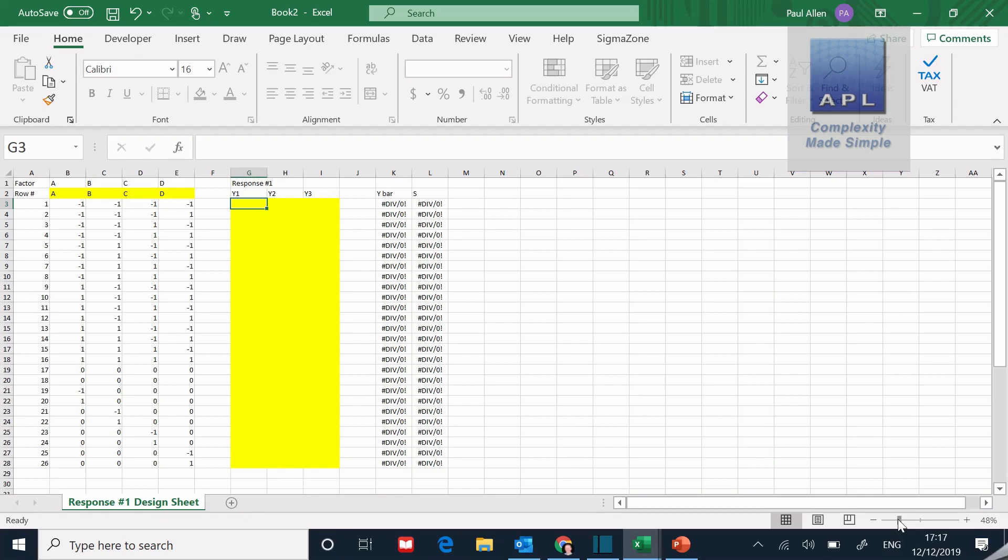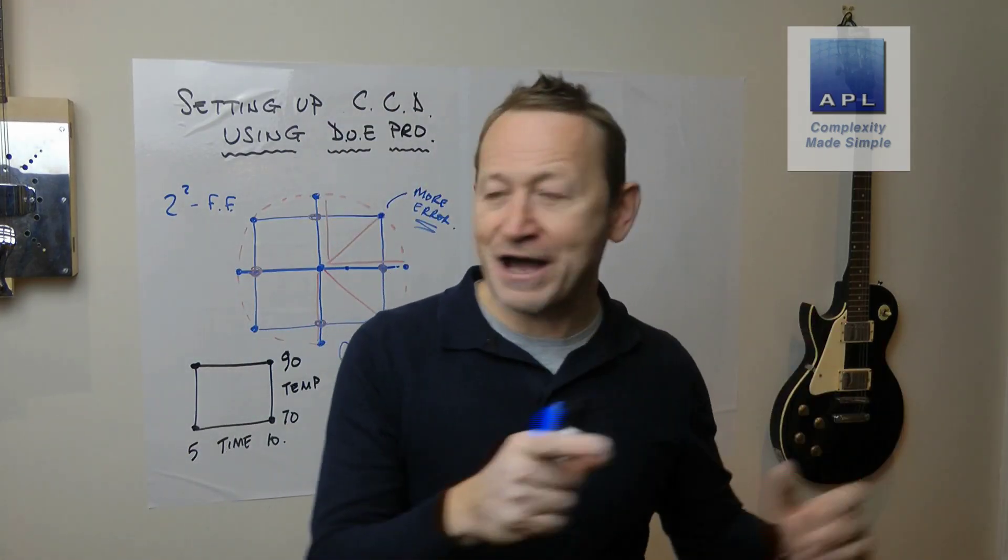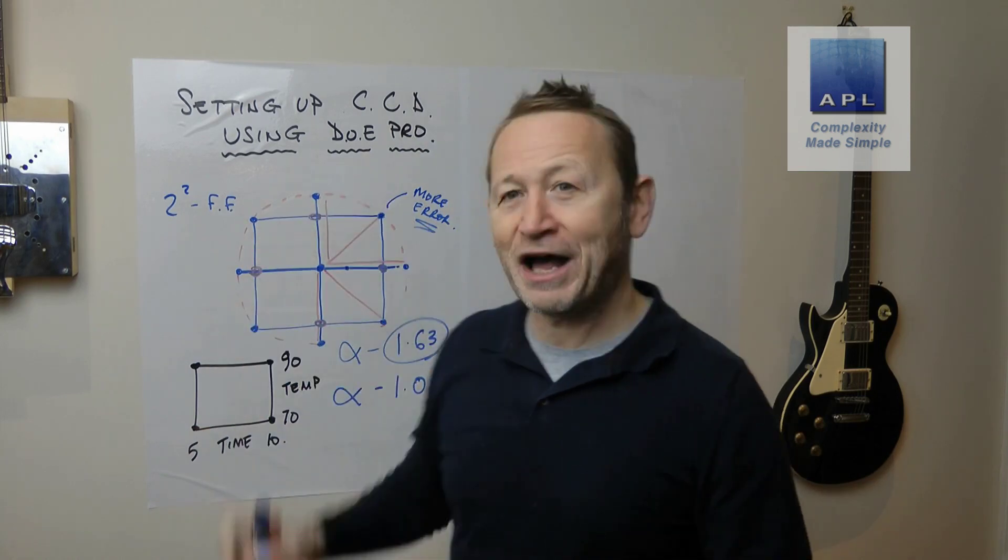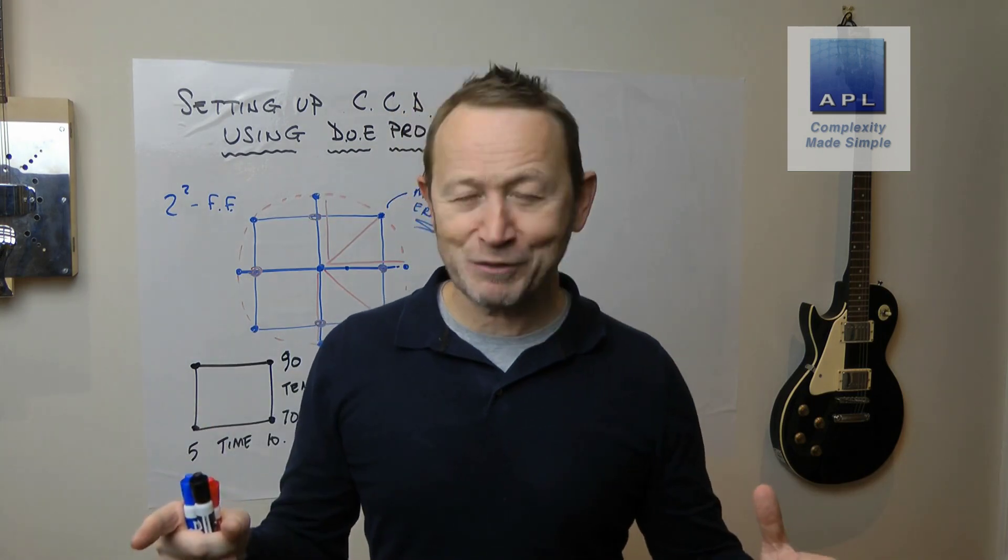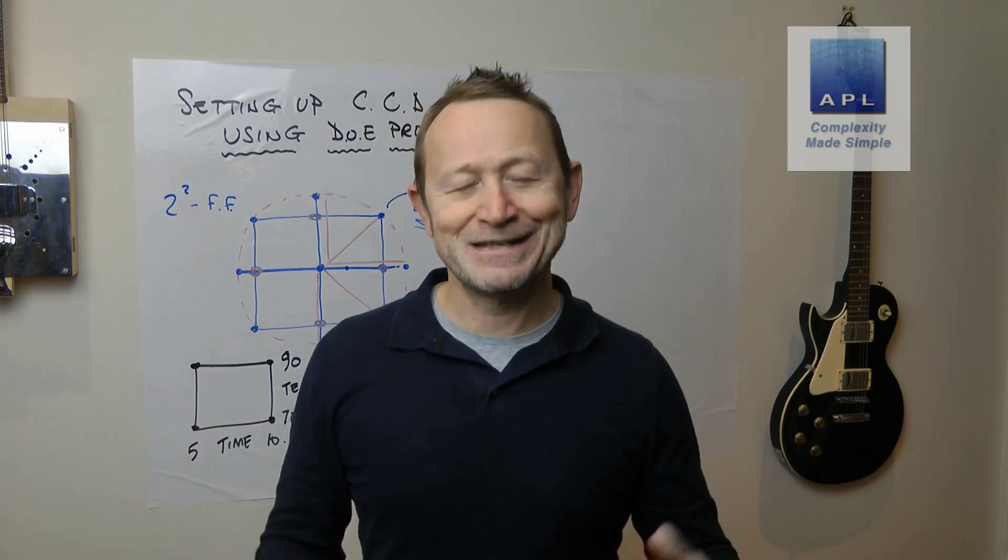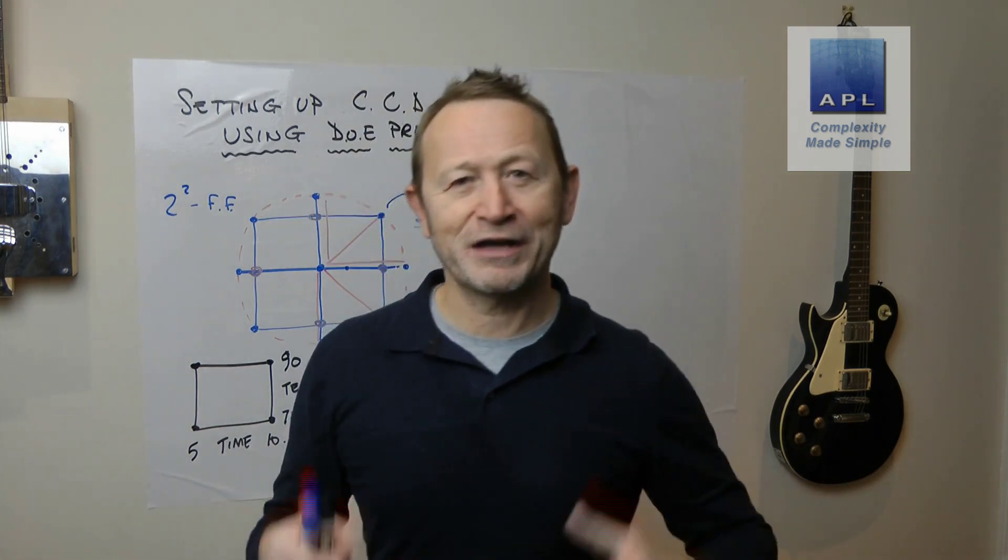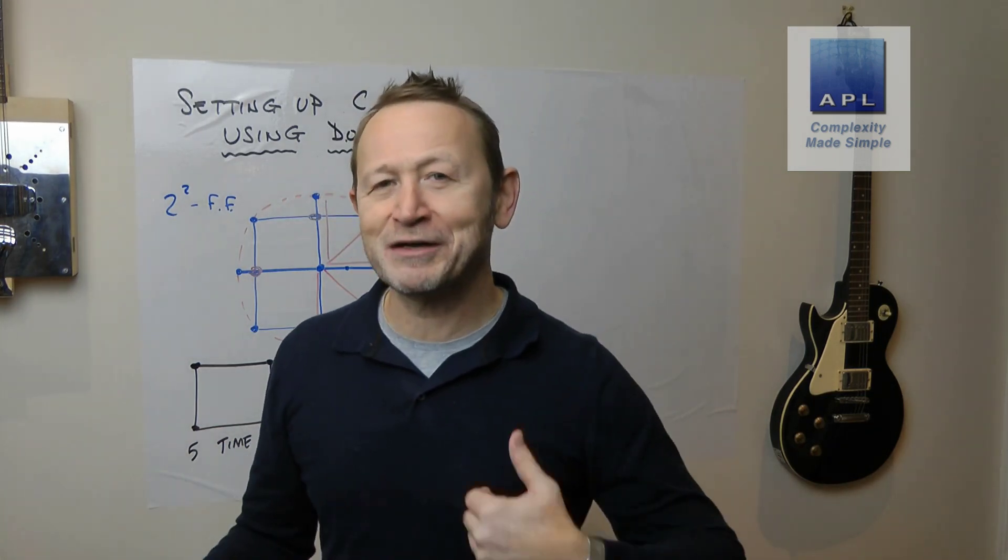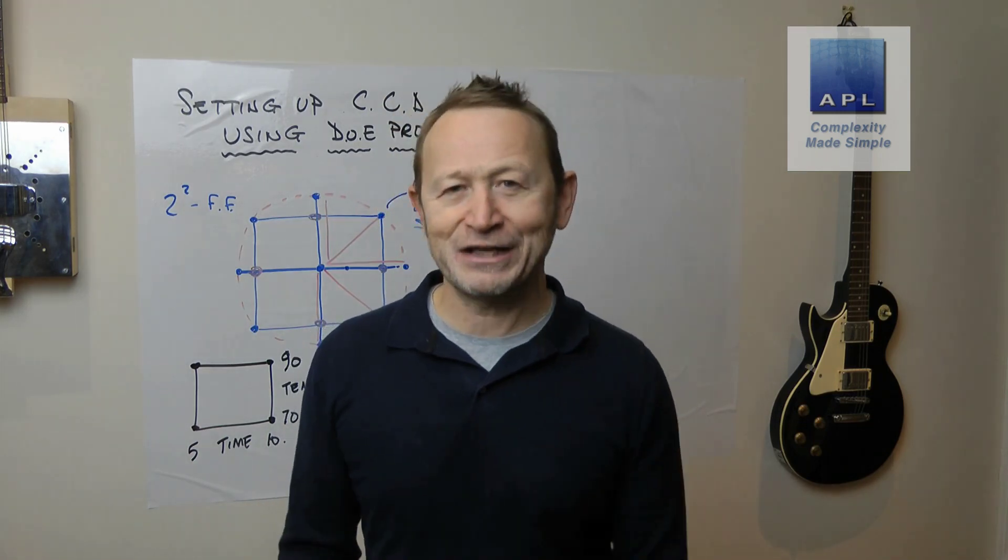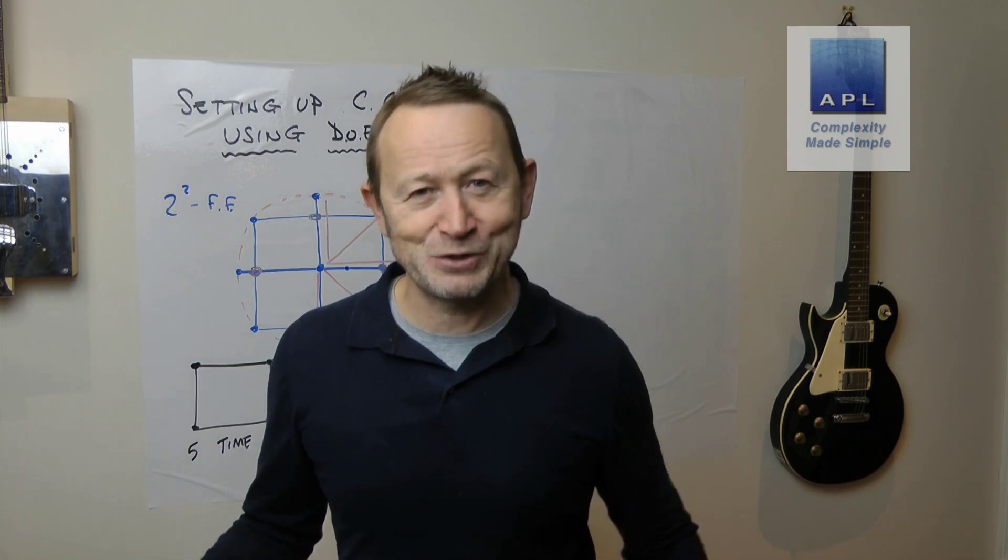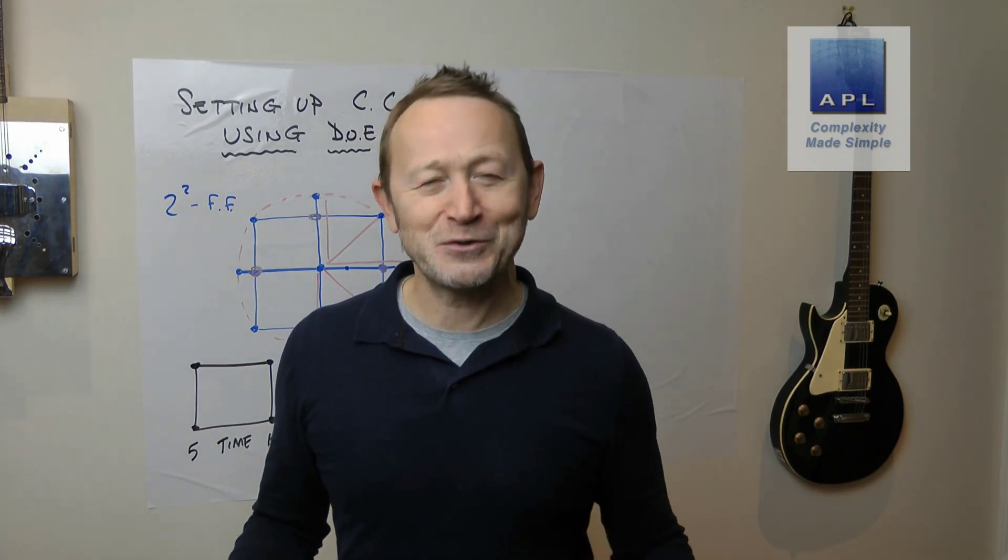Okay, that is the central composite design, either face or with the full alpha value hitting all the points on the sphere. That's the central composite design using DOE Pro. If you want any questions about the software, you want any questions about Six Sigma, please leave some comments, send me an email. I'm happy to answer any comments, make videos for you on any subject at all that you're having difficulty with, and I look forward to hearing from you soon.